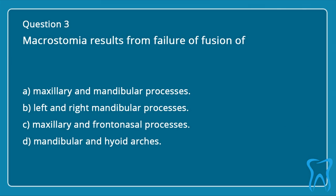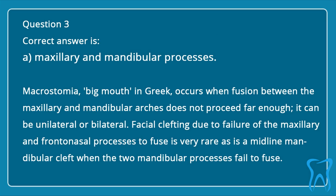Question 3. Macrostomia results from failure of fusion of: a. Maxillary and mandibular processes. b. Left and right mandibular processes. c. Maxillary and frontonasal processes. d. Mandibular and hyoid arches. Correct answer is a: Maxillary and mandibular processes. Macrostomia — big mouth in Greek — occurs when fusion between the maxillary and mandibular arches does not proceed far enough; it can be unilateral or bilateral.